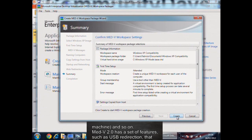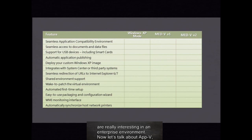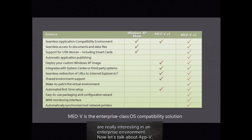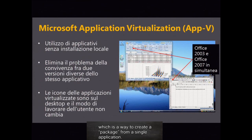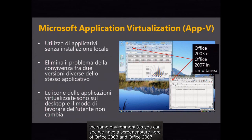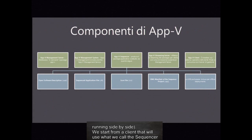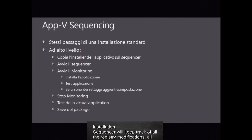MedV 2.0 has a set of features such as USB redirection that are really interesting in an enterprise environment. Now let's talk about AppV, which is a way to create a package from a single application. The idea is to enable two software versions that are not compatible to work together in the same environment. As you can see, we have a screen capture here of Office 2003 and Office 2007 running side-by-side. We start from a client that will use what we call the Sequencer, whose focus is on the recording of all the steps and changes related to a software installation. Sequencer will keep track of all the registry modifications, all the required DLLs, and so on during the setup phase of a software.